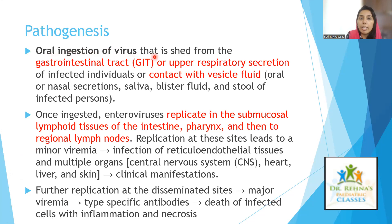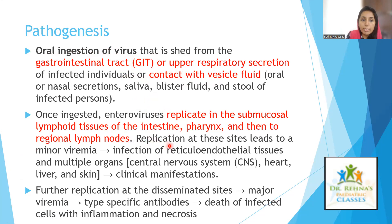The virus is shed from GIT or respiratory secretions of infected individuals, or through contact with vesicle fluid. The virus replicates in the subepithelial lymphoid tissue of the intestine and pharynx, then spreads to regional lymph nodes. Replication at these sites leads to minor viremia, then infection of reticuloendothelial tissues and multiple organs — CNS, heart, liver, skin — causing clinical manifestations. Further replication leads to major viremia, formation of type-specific antibodies, and death of infected cells with inflammation and necrosis.